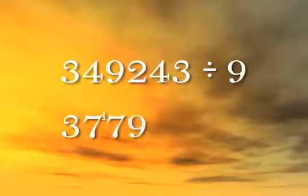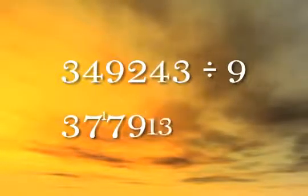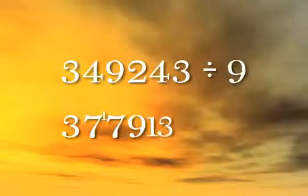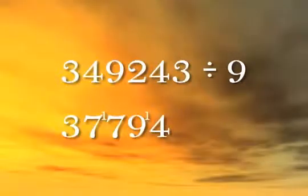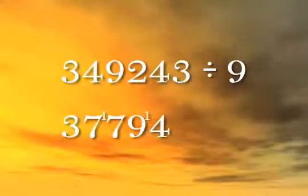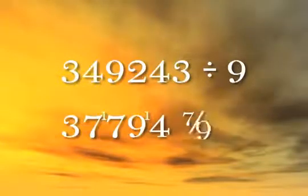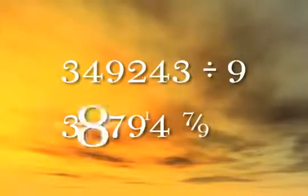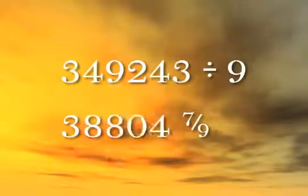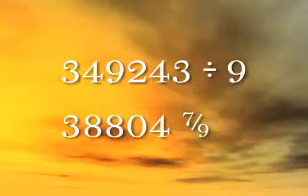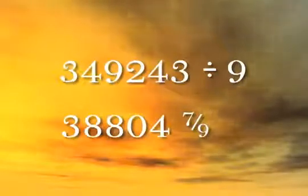Continuing: seven plus two is nine, four plus nine is thirteen. Nine divides into thirteen one time with a remainder of four. Write four in the column in question and carry one to the left. Four plus three is seven, so seven is the remainder. The answer is 388,047 remainder seven.